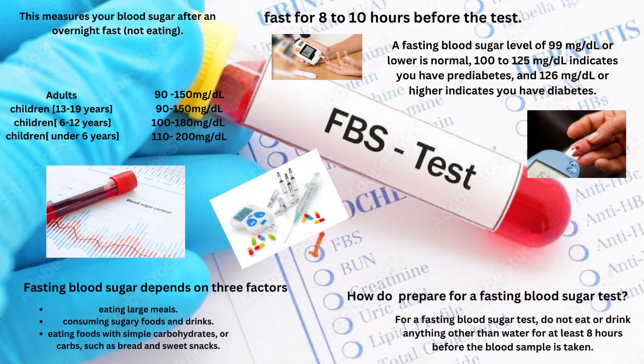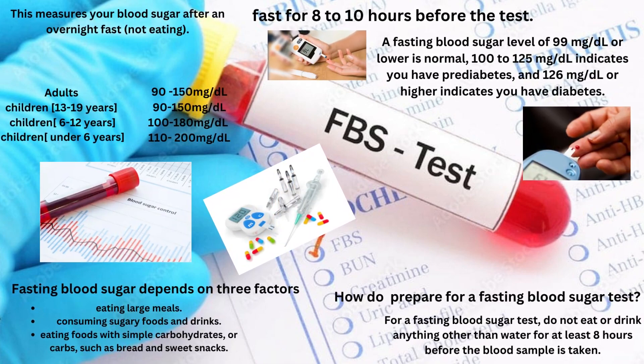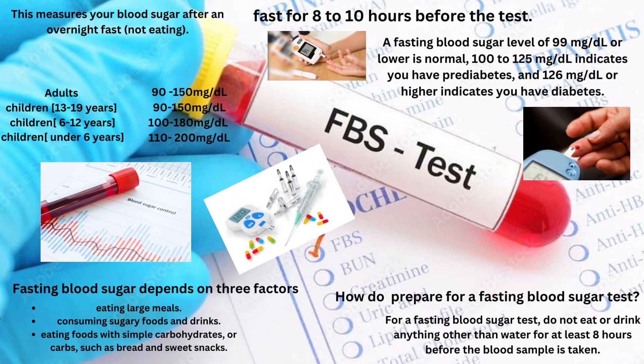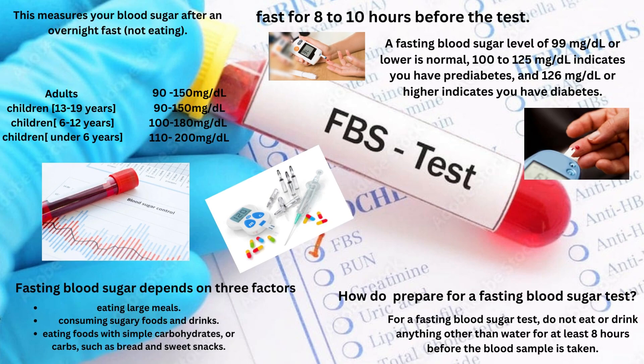Fasting Blood Sugar. Fasting blood sugar depends on three factors: eating large meals, consuming sugary foods and drinks, and eating foods with simple carbohydrates such as bread and sweet snacks. How to prepare for a fasting blood sugar test: do not eat or drink anything other than water for at least eight hours before the blood sample is taken.